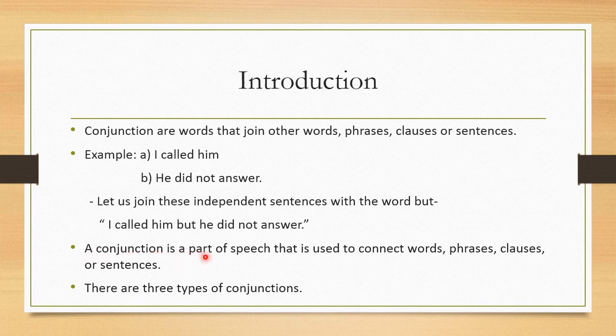A conjunction is a part of speech that is used to connect words, phrases, clauses, or sentences. There are three types of conjunctions that we are going to study in detail.